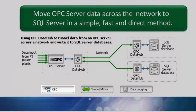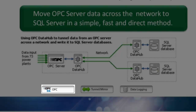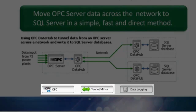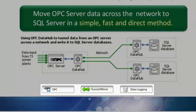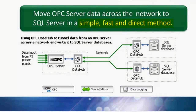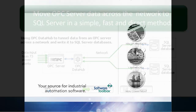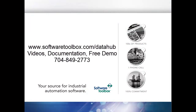In this application, the customer used OPC DA, tunneling, and data logging. The Data Hub solved the problem of moving data across the network into a database and was faster and a more direct method than they were previously using. For videos, documentation, and a free demo, visit SoftwareToolbox.com/DataHub.